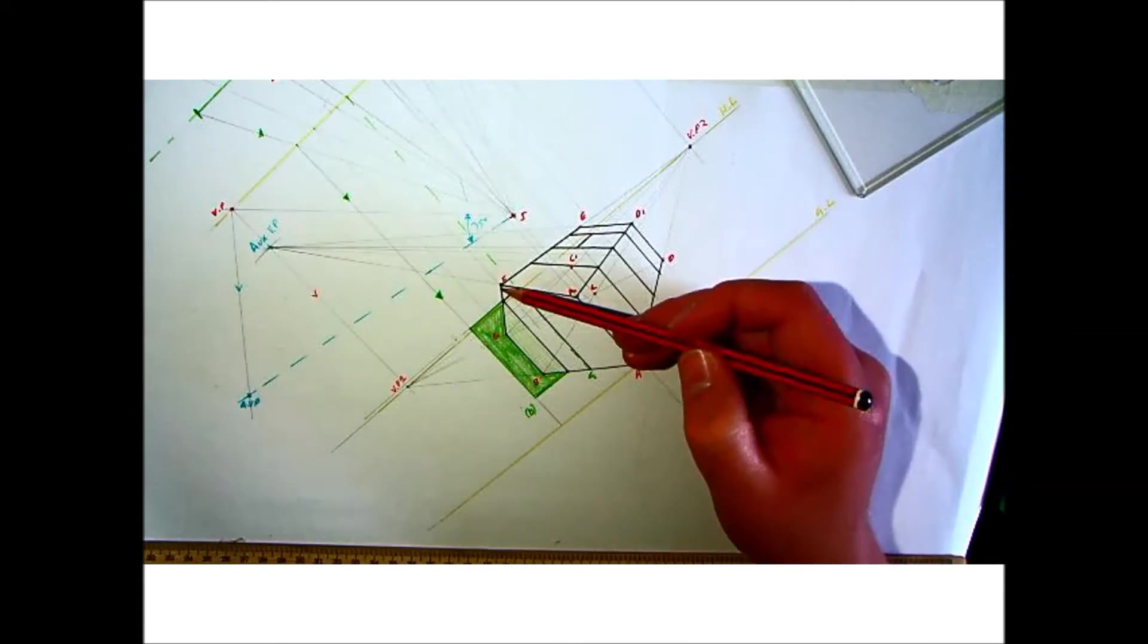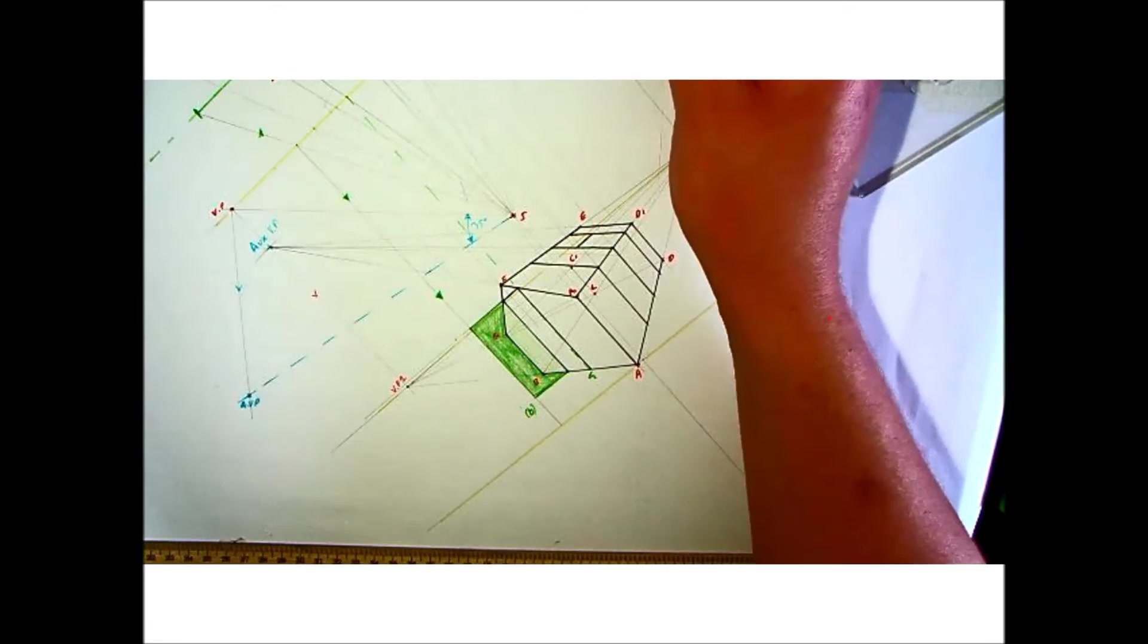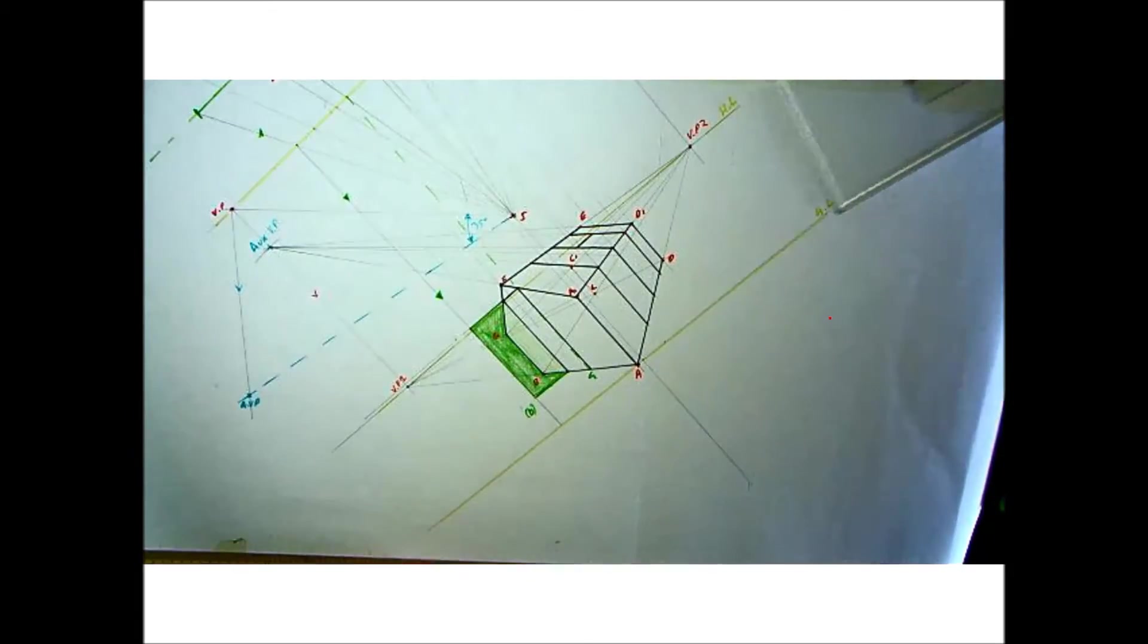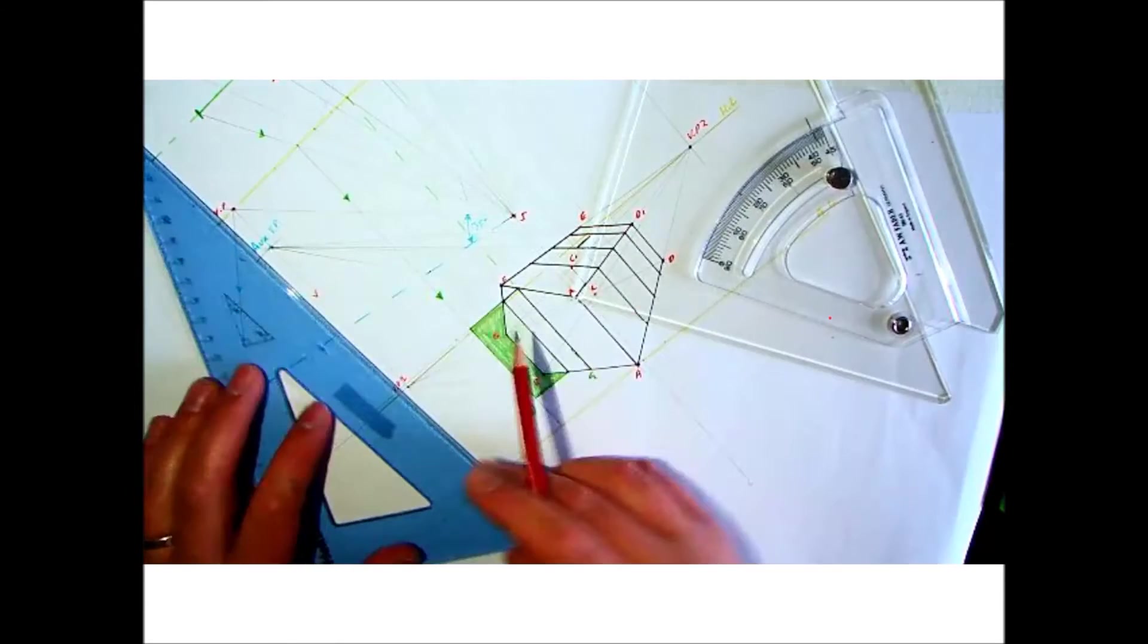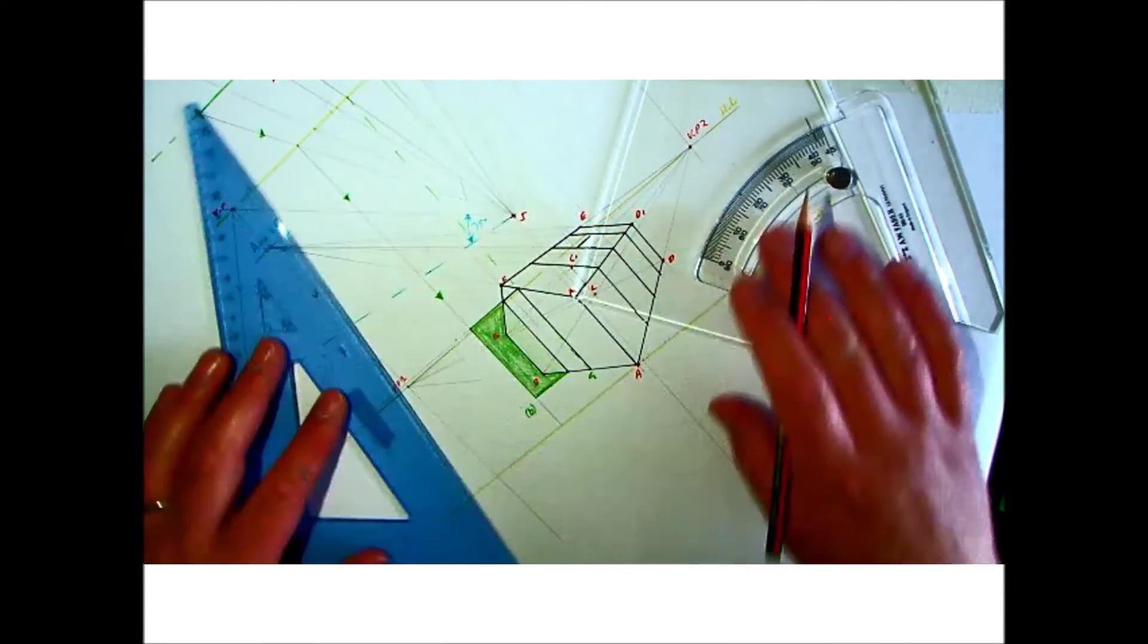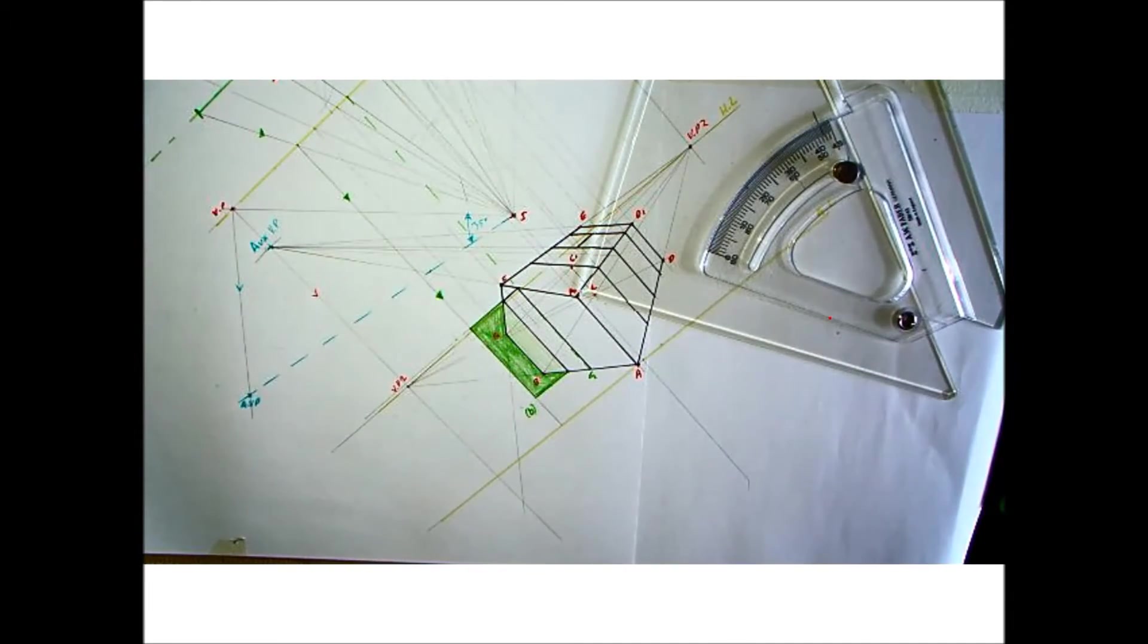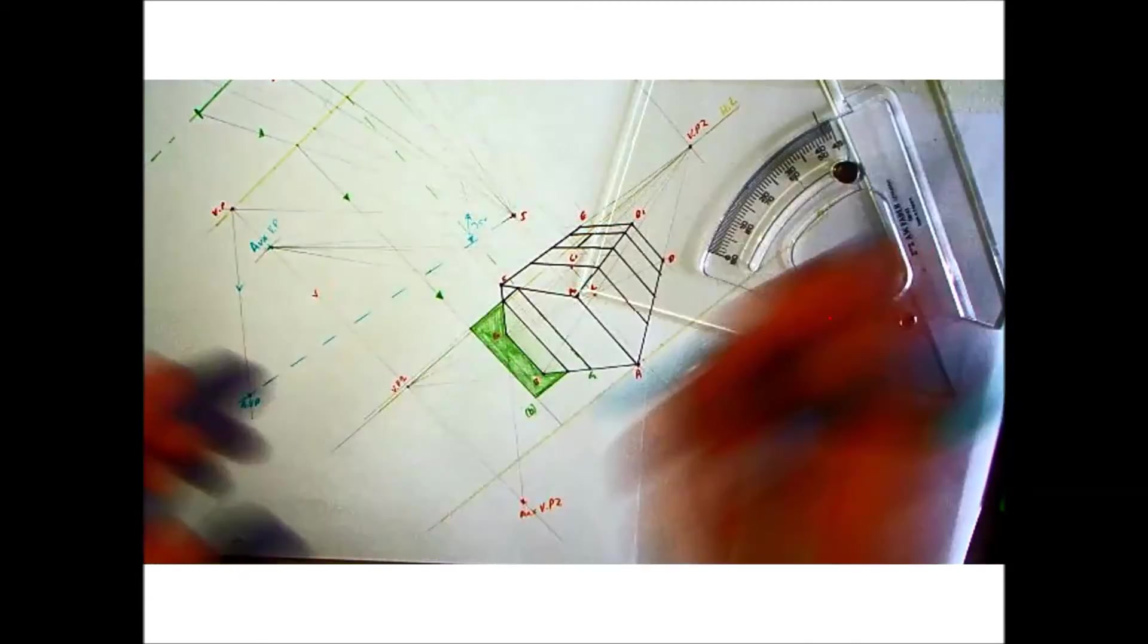So extend down VP1, it's all nice and light now, so extend down VP1 and extend down the edge of the roof here to find another auxiliary vanishing point. So I hope you can see this point here, so we say this is another auxiliary vanishing point, AVP1.